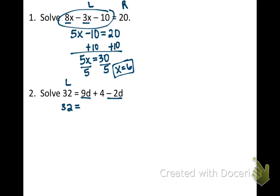so bring it with the two. 9d minus 2d is going to be 7d, plus 4 stays the same. We haven't done anything with that yet. And now it's a two-step equation. We're going to subtract the 4 over, and then divide by 7.